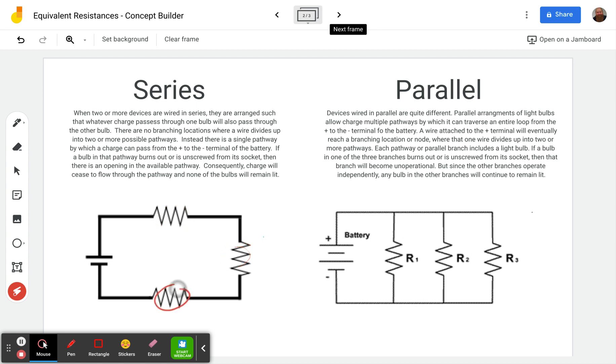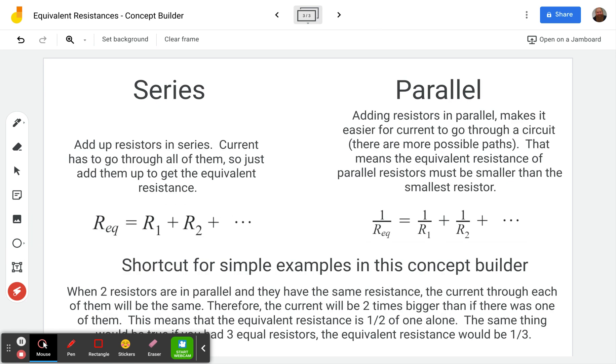When we put a 10 ohm, a 10 ohm, and a 10 ohm resistor, how much resistance does it feel in total? And is that the same in the two kinds of circuits? Well it turns out it's not. So let's take a look. First in series, you just add up the resistors. The current has to go through all of them, so just add them up to get their equivalent resistance.